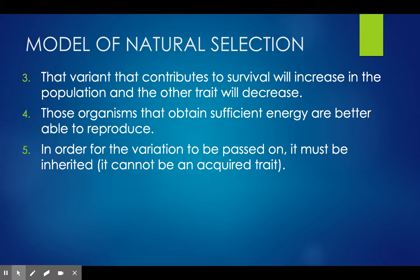In order for the variation to be passed on, it must be inherited — it can't be one of those acquired traits. It has to be able to be passed down to the offspring, and there has to be some type of variation in the possible trait. Fur color would be an example of this: it has to be able to be passed down to the offspring and there has to be some variation in the possible colors of fur.